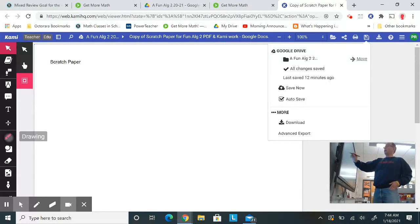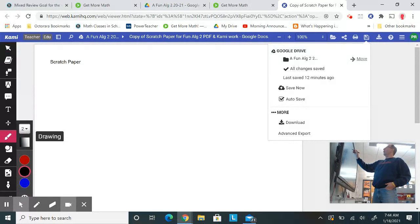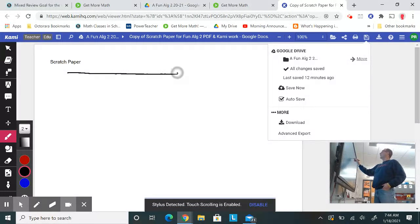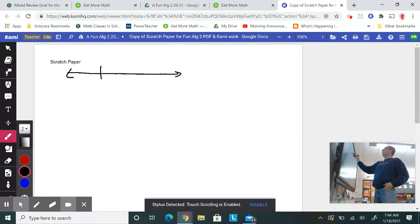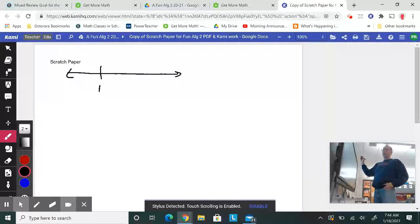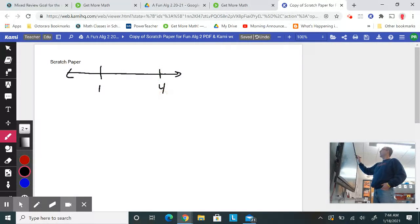So think about this. We all know on a number line that if I have a 1 here and I want to put a 4 on the number line, it's going to be to the right. So there's a 1, there's the 4, and we know that 1 is less than 4. That's our inequality sign for less than, right?